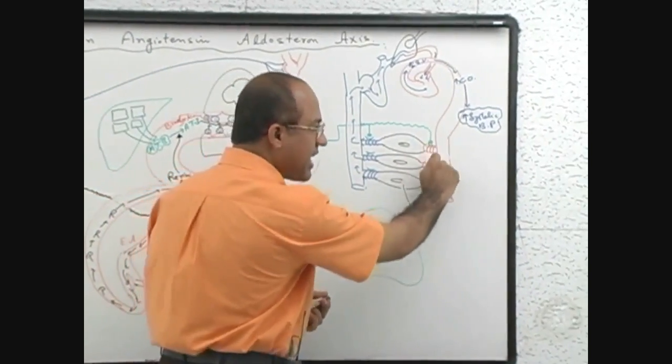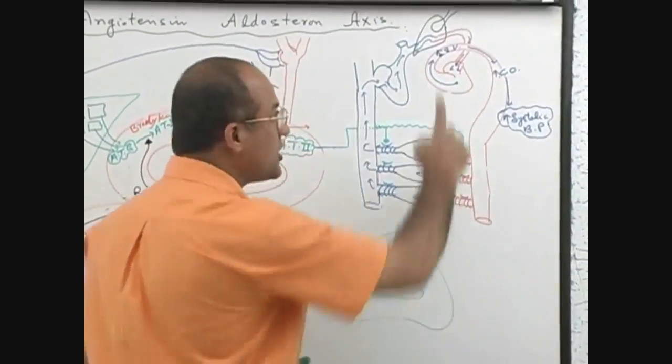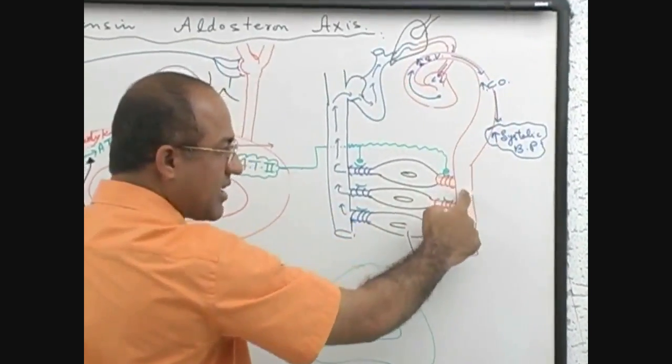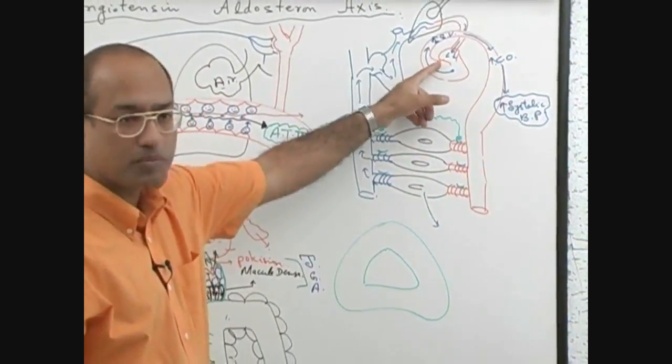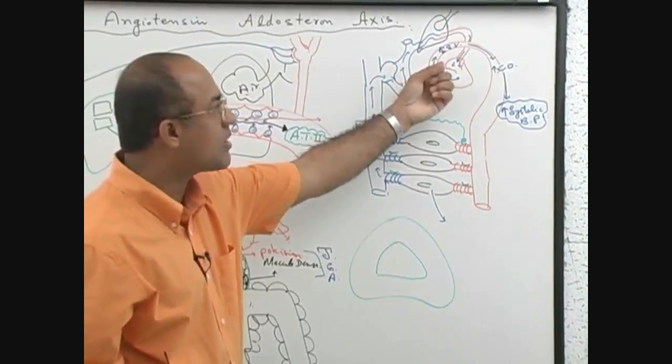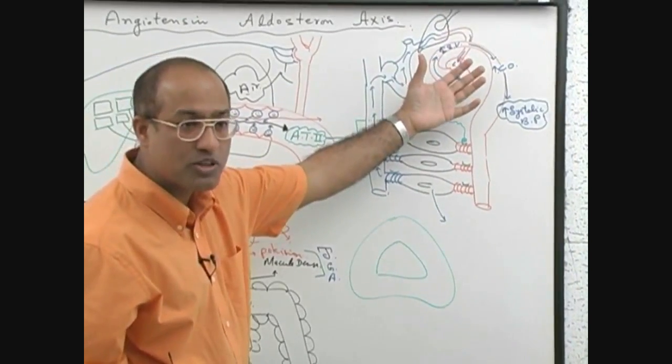Now if arterioles become very narrow, during systole when a lot of blood comes here, can it easily move to that side? No. So even if the heart is not pumping, because after systole, the heart will undergo relaxation, there will be onset of diastole.